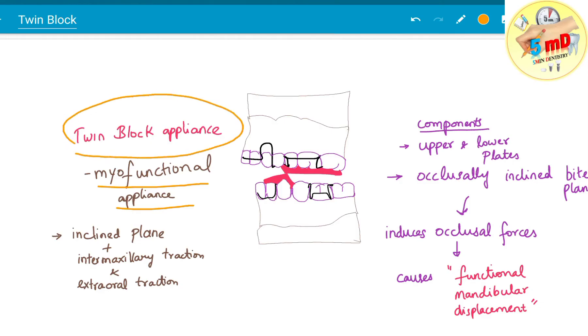Twin block appliance is one of the myofunctional appliances. As you see in the diagram, it contains an inclined plane and works by intermaxillary traction and also extraoral traction if needed.